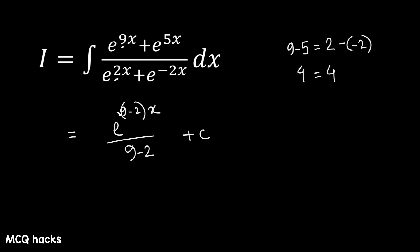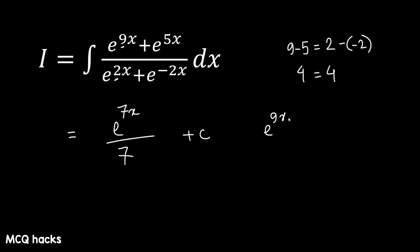And now the answer is the answer. You can write it. First, 7x divided by 7. Now the answer is exactly the answer. I'll do this: e to the power 9x plus e to the power 5x. I kept this correctly, but below what I wrote: e to the power of 4x plus 1. Keep the integration sign.